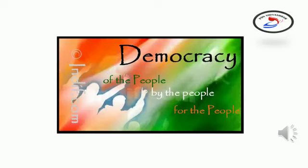Do you recall the chapter on the Dalit writer Om Prakash Valmiki's experience in school from your class 7 book? In that chapter, we talked about the discrimination Om Prakash faced because he was a Dalit. You read about how the Indian Constitution guarantees the right to equality to all persons and says that no citizen can be discriminated against on grounds of religion, caste, race, gender and place of birth. The right to equality is one of the fundamental rights guaranteed by the Indian Constitution.